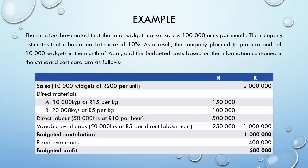We see we have our sales figure, we have our direct materials A and B, our direct labor, our variable overheads. Notice for each one we have a quantity in total and a price per kilogram for materials and per hour for direct labor and variable overheads. We then have our budgeted contribution, our fixed overheads, and our budgeted profit for the period.